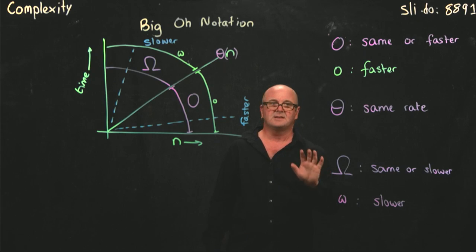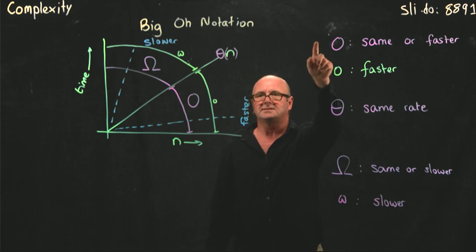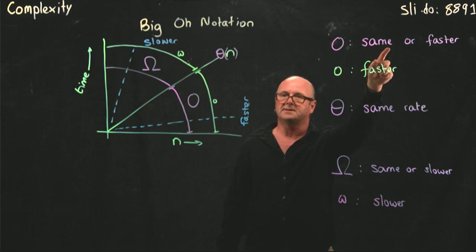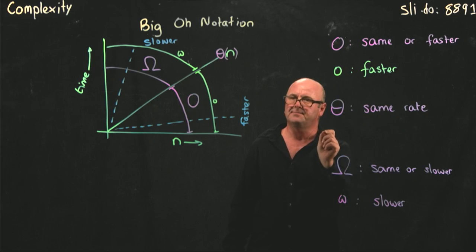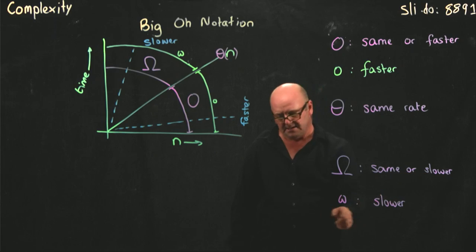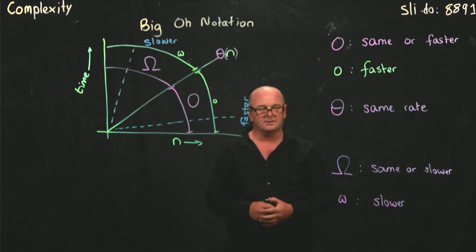So there's five terms here. They're really critical terms. Big O means that you're the same or faster. Little o means you're faster. Theta means that you're the same, exactly the same. Big Omega means you're the same or slower, and little Omega means that you're slower.